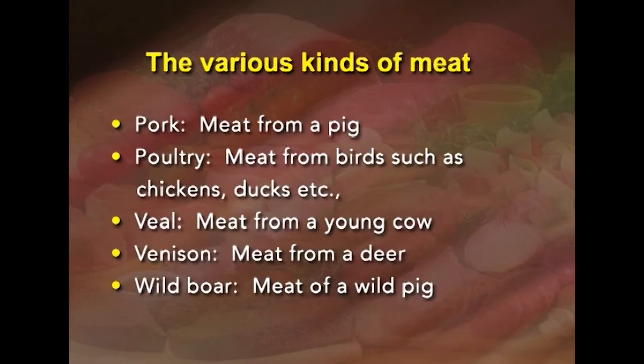Poultry is meat from birds such as chicken, turkey, ducks, etc. Veal is meat from a young cow. Venison is meat from deer. Wild boar is meat from a wild pig.